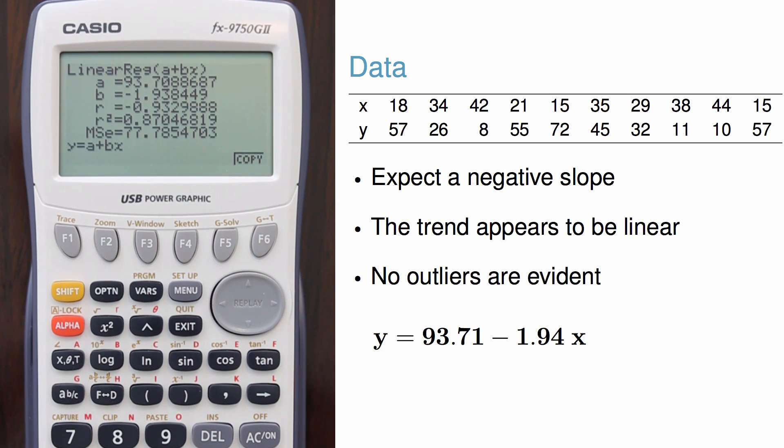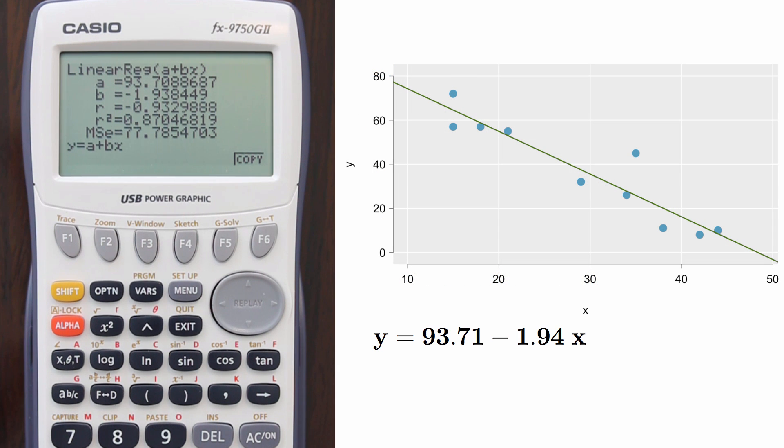The final equation of the line is y equals 93.71 minus 1.94 times x. Notice the negative slope, which made sense with the scatter plot I examined earlier. Here's a plot of the data with the regression line shown.